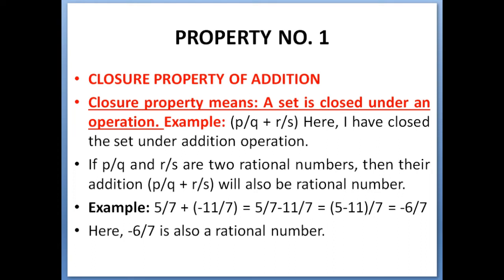So the first property is closure property of addition. What do you mean by closure property? A set is closed under an operation. Means when you perform an operation like addition, you close two or more rational numbers inside brackets or parentheses. That means closure property.